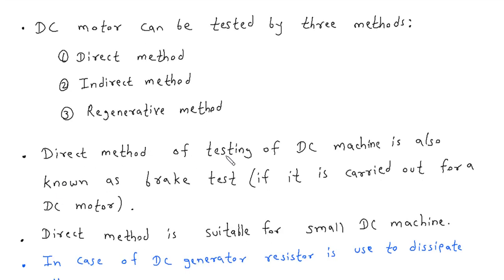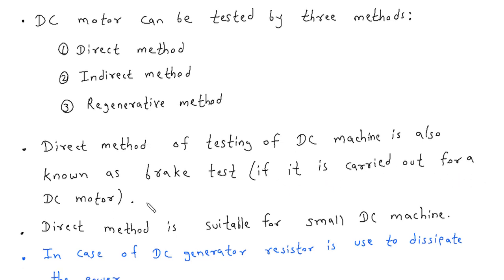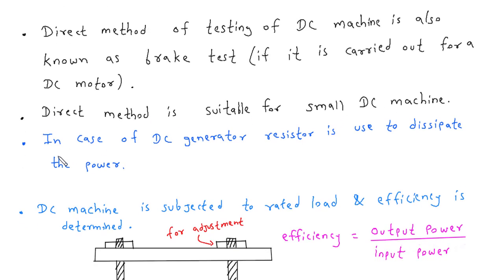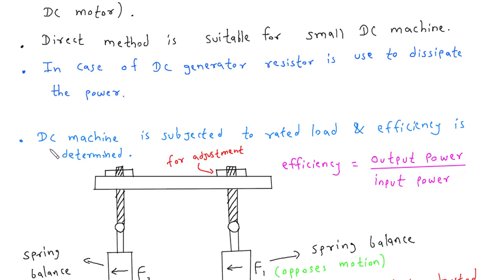Direct method of testing of DC machine is also known as brake test if it is carried out for a DC motor. Direct method is suitable for small DC machine. In case of DC generator, resistor is used to dissipate the power. DC machine is subjected to rated load and efficiency is determined. And we know the formula for efficiency is output power upon input power.